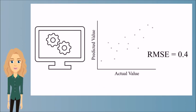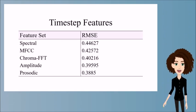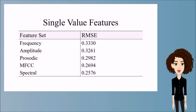The lower the root-mean square error, the more accurate the prediction is. The time-step features produced an RMSE of approximately 0.4. The prosodic set performed best. The single-value feature sets performed better, with an RMSE ranging between 0.2 and 0.3. The lowest RMSE overall is the single-value spectral set.